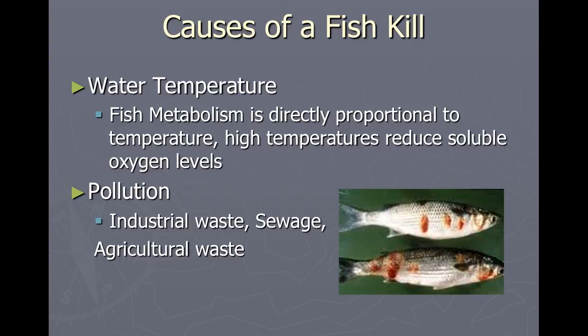Sudden changes in temperature, such as discharge from a power plant, can also cause fish kills through shock or through a reduction in dissolved oxygen. As water temperature increases, its ability to hold oxygen decreases. If the change in temperature is too great and the amount of dissolved oxygen is reduced too much, it will cause fish kills.